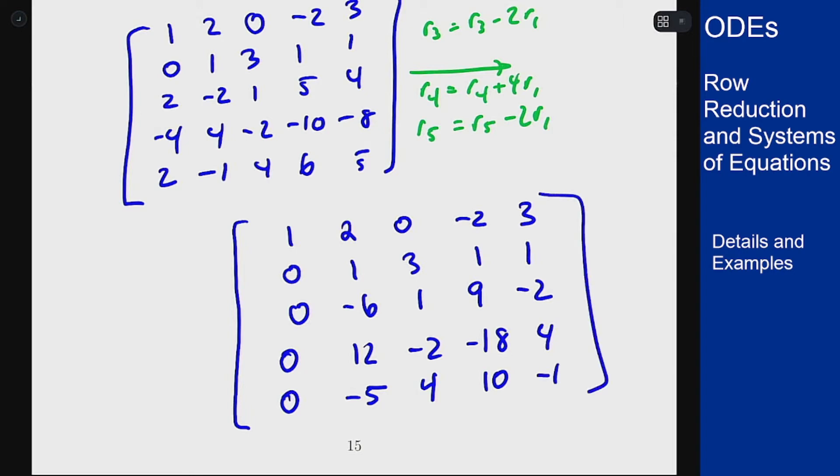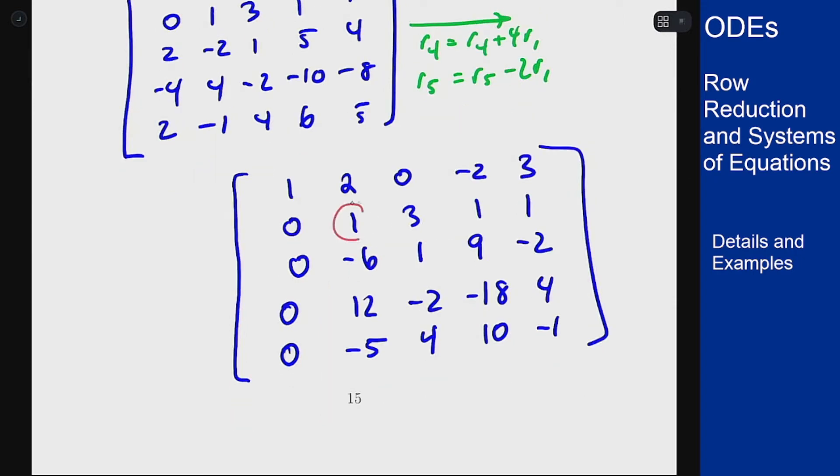Now I move one step inside so I'm going to ignore the top row and the first column and I'll focus on this 4 by 4 bit inside. I see a 1 here so I can leave that 1 alone and I want to use that 1 to deal with the three entries beneath it.